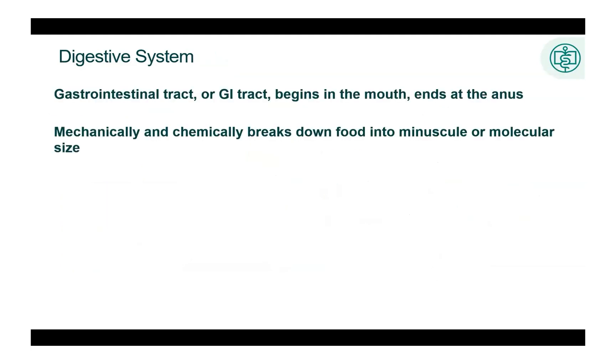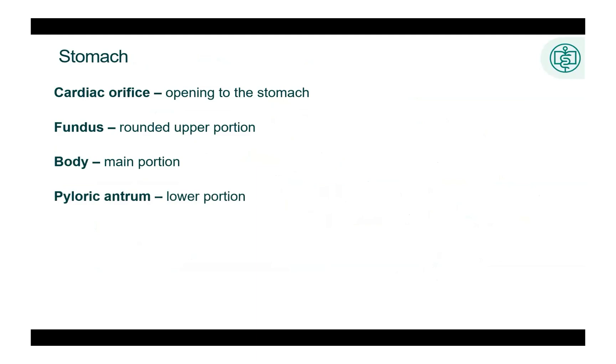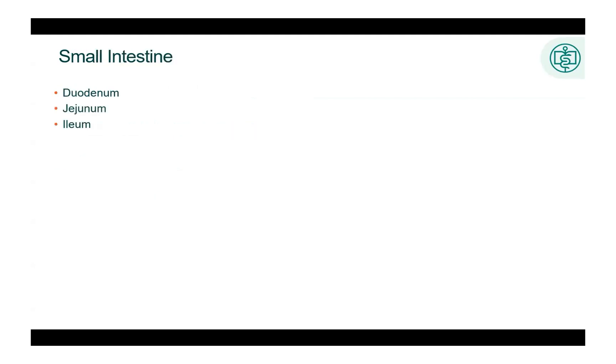The digestive system is a feeding tube that begins in the mouth and ends at the anus. This structure winds its way through several body cavities. It encompasses a multitude of structures and organs that mechanically and chemically break down food for absorption into the bloodstream and use at the cellular level. The esophagus joins the stomach at the cardiac orifice. The fundus of the stomach is the rounded upper portion of the stomach. The body is the main portion and the pyloric antrum is the lower portion of the stomach.